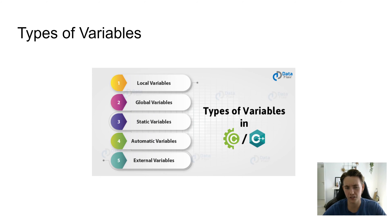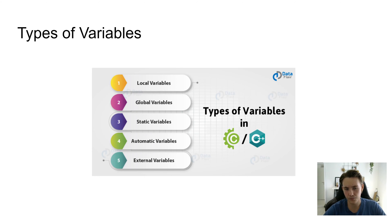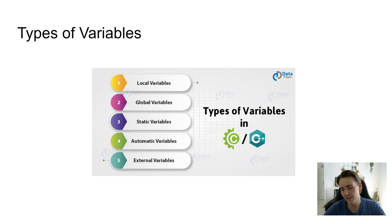In C++ there are also different types of variables. We have local variables, which are only known inside a scope — so if you have an if statement, a loop, or a function, a variable defined inside there is only known in that scope. Once you go out of the scope, the variable is no longer accessible. Then there are global variables, where you define a variable that the program knows everywhere — you can use it in if statements, functions, and so on.